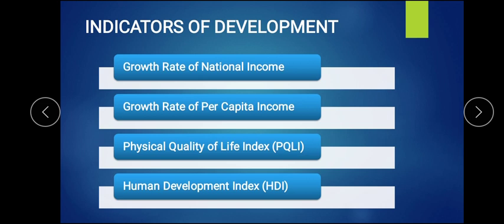If the extension of education is more, it helps us to live in a better way. If life expectancy is more, it gives good quality of life. If infant mortality rate is less, it again contributes positively. All three things together determine how we calculate Physical Quality of Life.